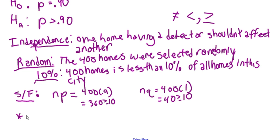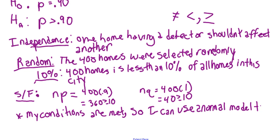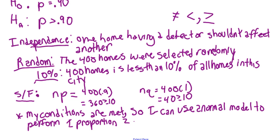Just like with confidence intervals, I'll state that my conditions are met, name the model, and name the test. Since we're dealing with proportions, I'm still using a normal model. I can use a normal model to perform a one-proportion z-test. So instead of a z-interval like in confidence intervals, it's a z-test.